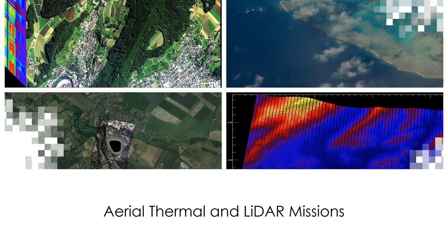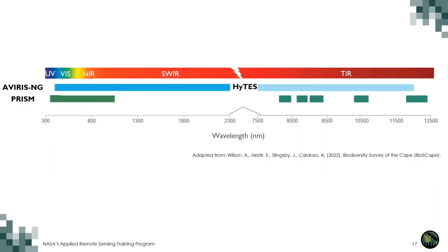Now that we've reviewed LIDAR and thermal infrared, let's examine some NASA sensors that have been deployed for airborne campaigns. In this diagram of the electromagnetic spectrum, we can see the sensors we reviewed in the previous session — AVIRIS-NG and PRISM — along with their spectral range. In addition to AVIRIS-NG and PRISM, we will also be looking at HyTES today, which covers a different portion of the spectrum: the thermal infrared section.